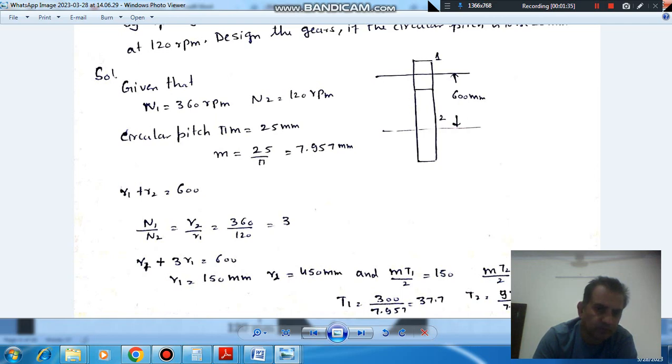So R2 comes out as 3R1. So putting this here, we can get R1 as 150 mm, R2 as 450 mm.